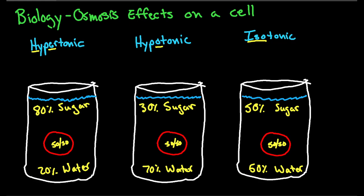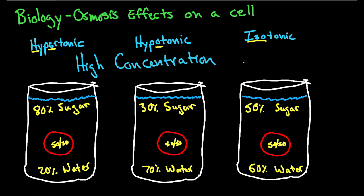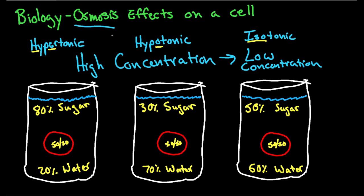The next thing we need to determine is where the higher concentration is in all three of these solutions. Because in osmosis, water travels from a high concentration to a low concentration. A lot of students start talking about movement of sugars — but remember, osmosis is the movement of water only.